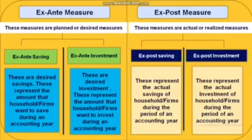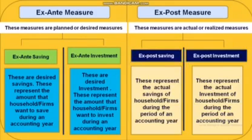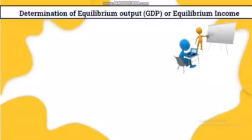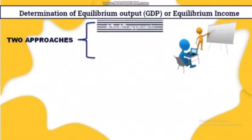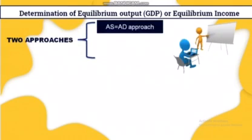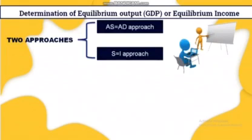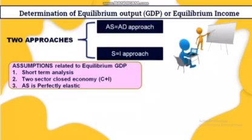Ex-ante means the initial planned stage — what we are planning to do. Ex-post means what is our actual outcome. Now we will talk about the determination of equilibrium output or equilibrium income, taking two main approaches. The first approach is the AS equals AD approach, and the second approach is the S equals I approach. Before we start, we will keep some assumptions in mind.